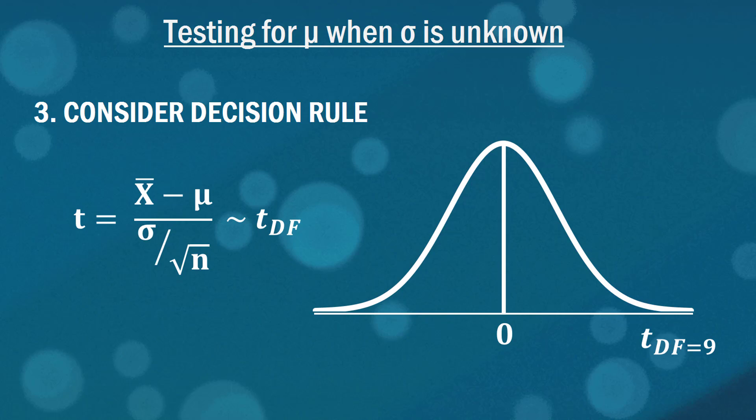The next thing we do is consider our decision rule. The t distribution is also a bell curve type shape but it's defined by its number of degrees of freedom which in this case is going to be 9 because there were 10 observations and the degrees of freedom is always n minus 1. So this is the particular t distribution with 9 degrees of freedom.